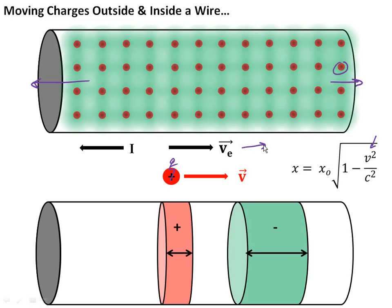The negative charges are not compressed because in case three, the negative charges and the outside positive charge are moving in the same direction — so their frames of reference match. This is not true for the positive charges, because the atom cores remain fixed within the wire. So from the perspective of the rider on the outside charge, the positive charge in the wire gets compressed — squished together — while the density of the negative charges remains essentially unchanged.